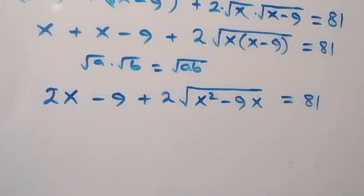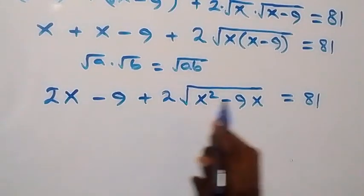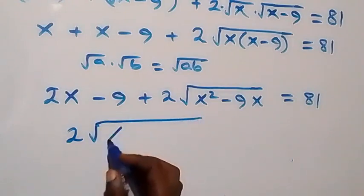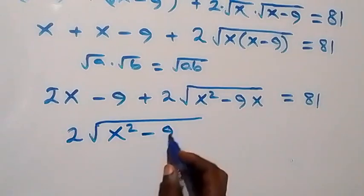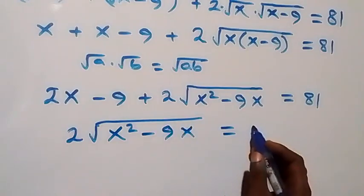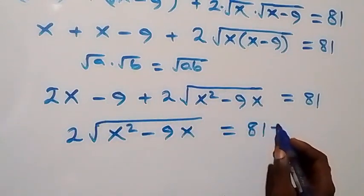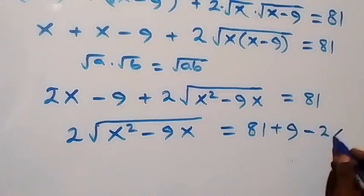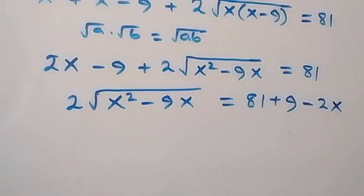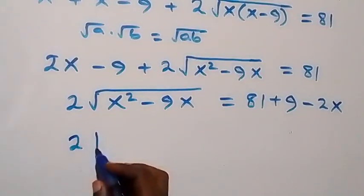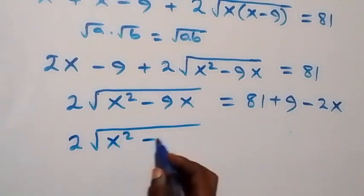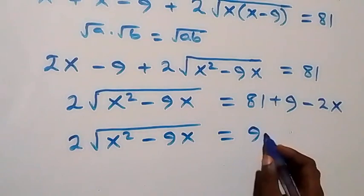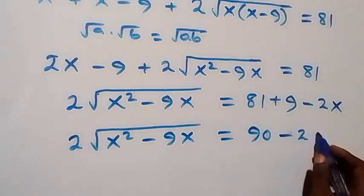We can separate: moving x and minus 9 to the other side, so we are left with 2 multiplied by square root of (x squared minus 9x) equals to 81 minus 9 — which becomes plus 9 — then minus 2x comes here. So 2 times square root of (x squared minus 9x) equals to 90 minus 2x.